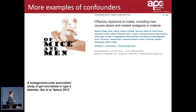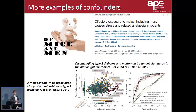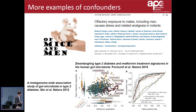Another microbiome study that got a lot of attention in 2012 was where a large European and Chinese group found differences in gut microbiota between people with type 2 diabetes and healthy individuals. The same group later found that the reason was that those with diabetes were taking the common drug metformin, which actually biased the microbiota. You can see samples from metformin-treated patients clearly separated from diabetes patients without the drug and from controls — the drug clearly biased the microbiome. This is important to be aware of.